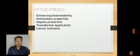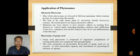Silymarin phytosome: Most of the phytosomes are focused on silymarin or Silybum marianum, which contains premier liver-protective flavonoids. The fruit of the milk thistle plant contains flavonoids known for hepatoprotective effects. Silymarin has been shown to have positive effects in treating liver diseases of various kinds, including hepatitis, cirrhosis, fatty infiltration of the liver, and inflammation of the bile duct.